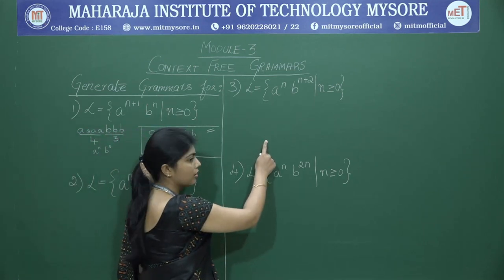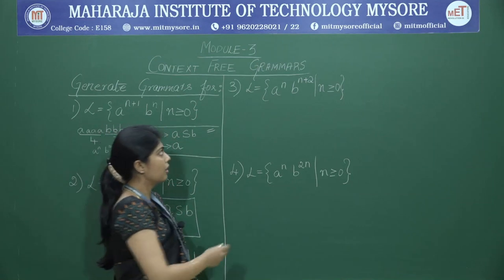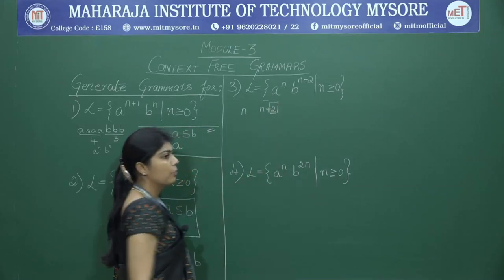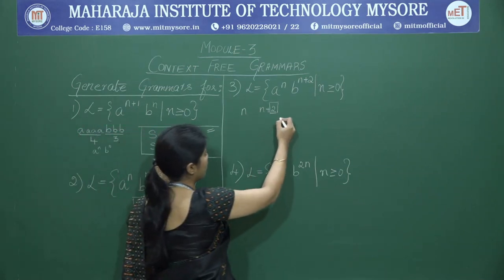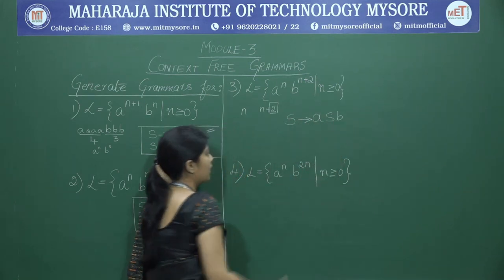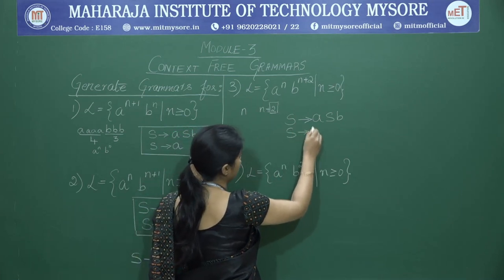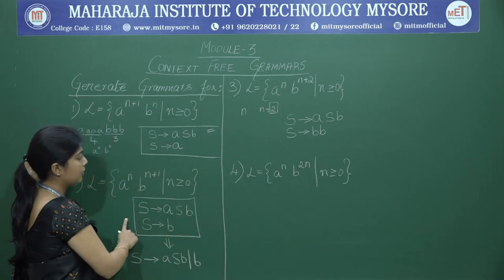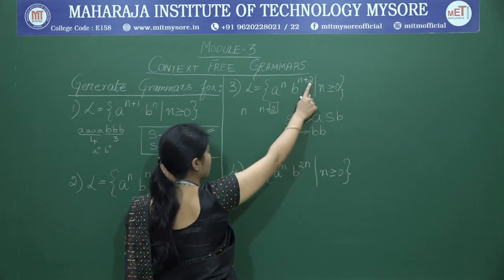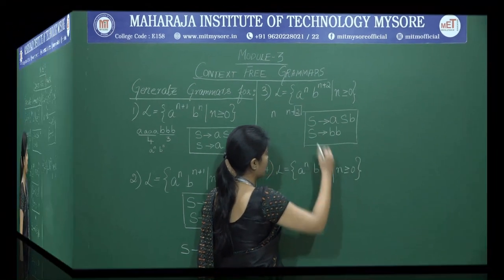The next problem: L = a^n b^(n+2), where there must be n a's and n+2 b's — two extra b's compared to a's. We write S → aSb for equal numbers of a's and b's, and S → bb to account for the two extra b's. Following similar reasoning as the previous problem — one extra b uses S → b, and two extra b's uses S → bb.